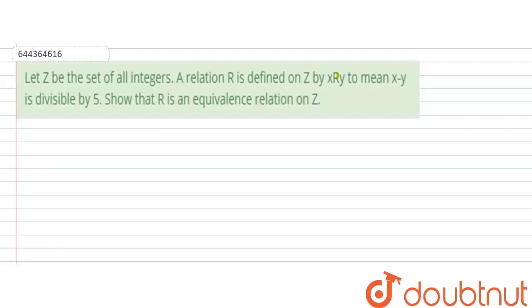Hello everyone, so let us start with a question. The question says that let Z be the set of all integers. A relation R is defined on Z by x is related to y to mean x minus y is divisible by 5. Show that R is an equivalence relation on Z.